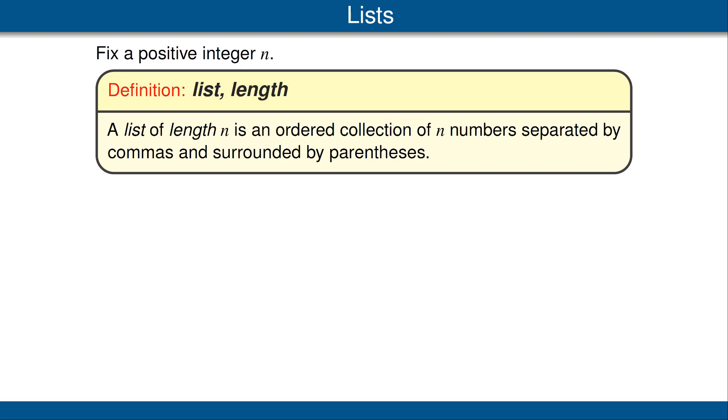To generalize R² and R³ to R^n and C^n, we first need to discuss the concept of lists. For now, we will consider only lists of numbers, but later we will need to consider lists consisting of other elements. Fix a positive integer n. A list of length n is an ordered collection of n numbers separated by commas and surrounded by parentheses. For example, (7, 3) is a list of real numbers.